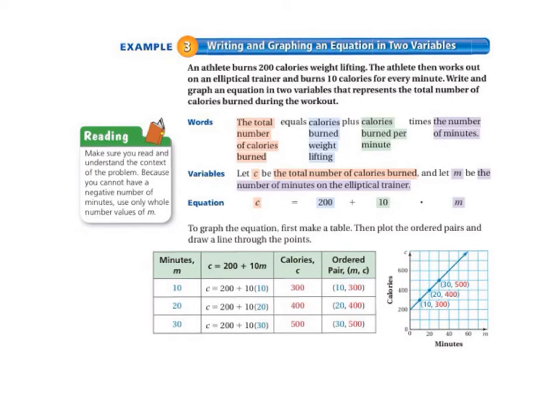Example 3 is on page 317, and we're writing and graphing an equation in two variables. So this time we have to write the equation as well; it's not given to us. An athlete burns 200 calories weight lifting. The athlete then works out on an elliptical trainer and burns 10 calories for every minute. Write and graph an equation in two variables that represents the total number of calories burned during the workout.